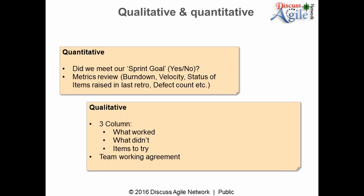For qualitative measures, one very standard way is to have three columns on the board: what worked well in the last sprint, what did not work well, and what are the items to try next sprint. There are different schools of thought on this. One school says to cover all three. Another says to avoid focusing on what didn't work well, which can lead to a blame game, and instead focus on what worked well and what specific actionable items to try next time.